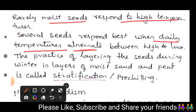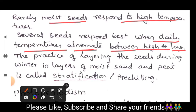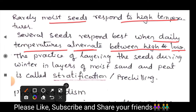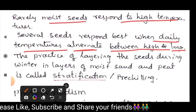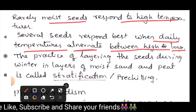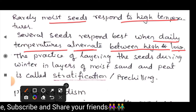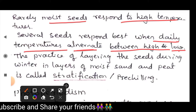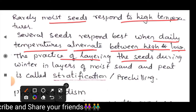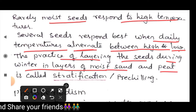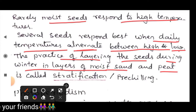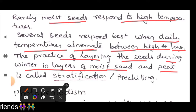Seeds are responsive to temperature, alternating between high and low temperatures. The practice of layering seeds during winter in layers of moist sand and peat is used to break dormancy. After a period in these layers, the seed is removed from the moist sand and peat, and seed dormancy is removed.